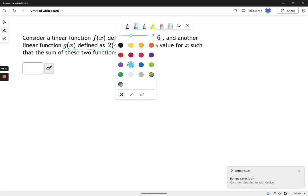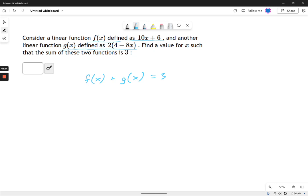So if I turn that into an equation, watch what's going to happen. This is simply saying f of x plus g of x equals 3. That's all this thing is saying, and it says figure out what x is.